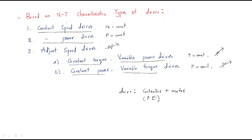Based on different types of drives, based on speed or characteristics, we have three types: one is constant speed drive, second one is constant power drive, and third one is adjustable speed drive. In adjustable speed drive, we again have two types: one is constant torque variable power drive, and second is constant power and variable torque drive.